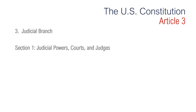Article 3 is about the judicial branch. Section 1 deals with judicial powers, courts, and judges. It says the judicial power of the United States shall be vested in one Supreme Court and in such inferior courts as the Congress may from time to time ordain and establish. The judges, both of the Supreme and inferior courts, shall hold their offices during good behavior and shall receive a compensation which shall not be diminished during their continuance in office. The Supreme Court is vested with judicial power, as are the lower federal courts that Congress creates. Federal judges serve in their offices for life unless impeached and convicted by Congress, and their pay may not be reduced during their time in office.